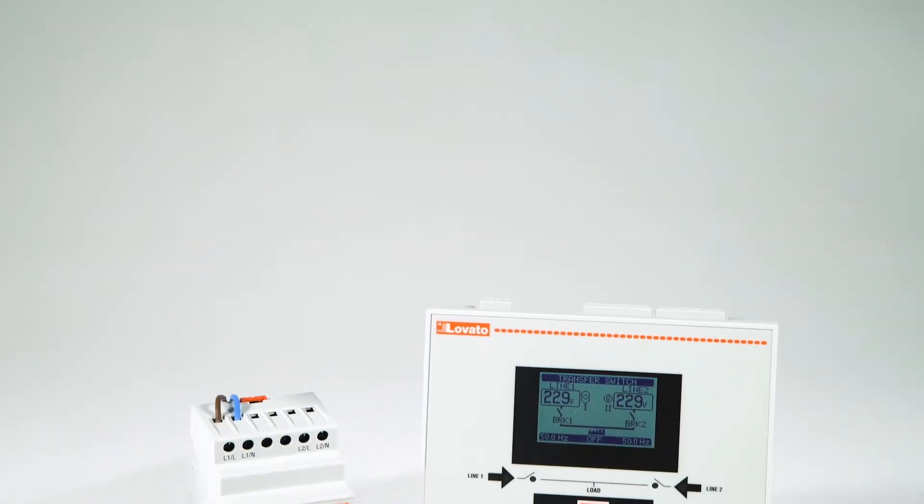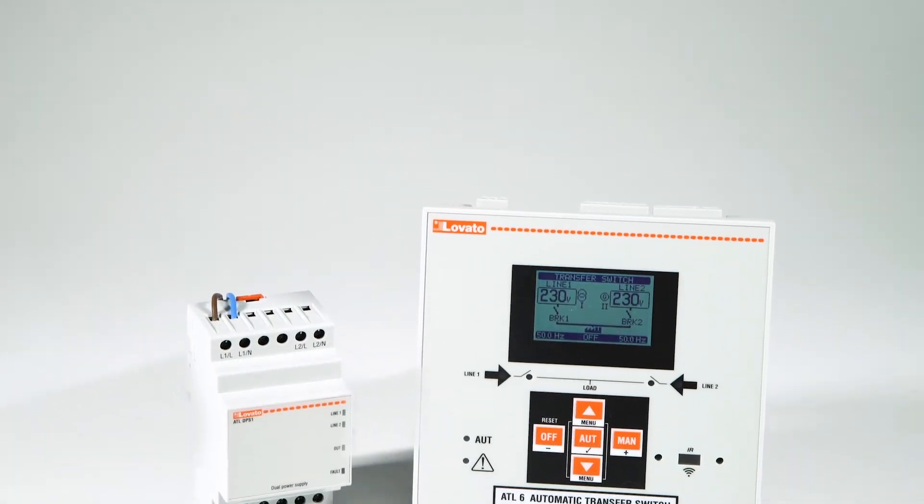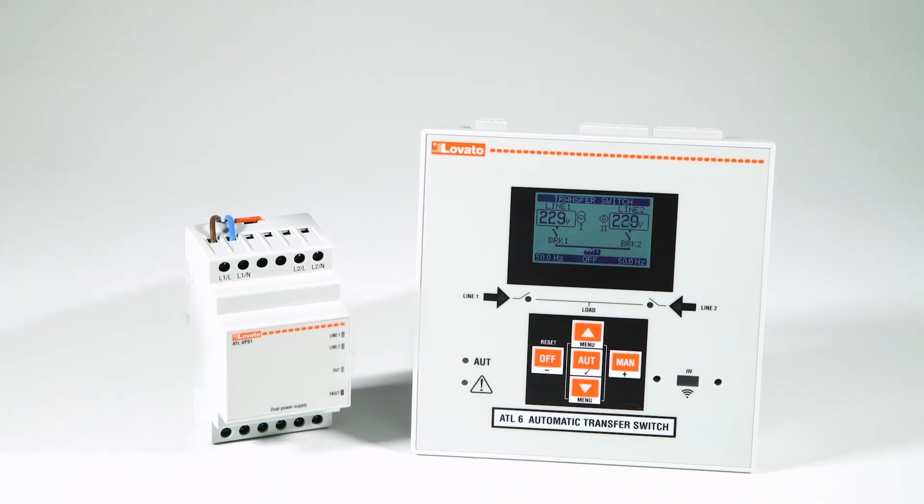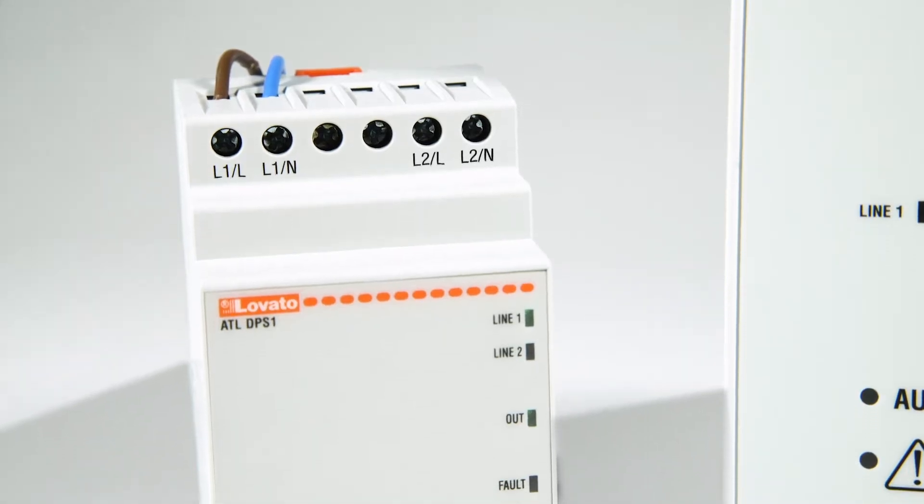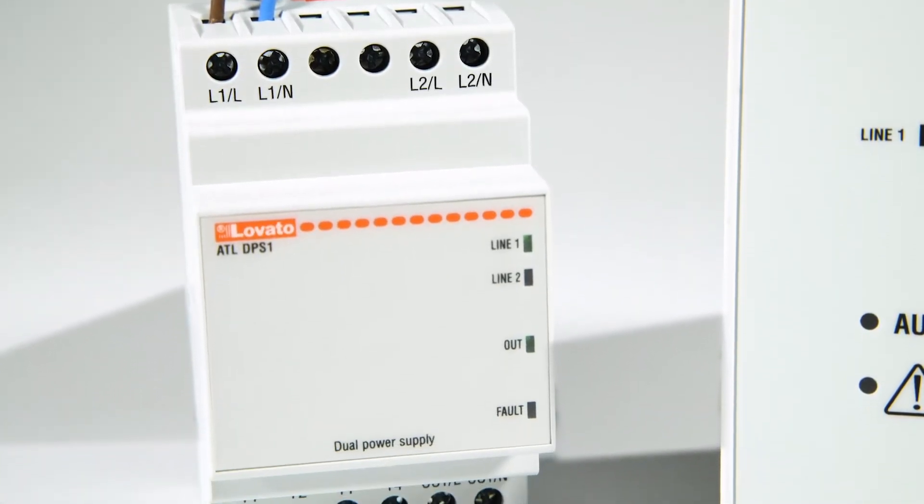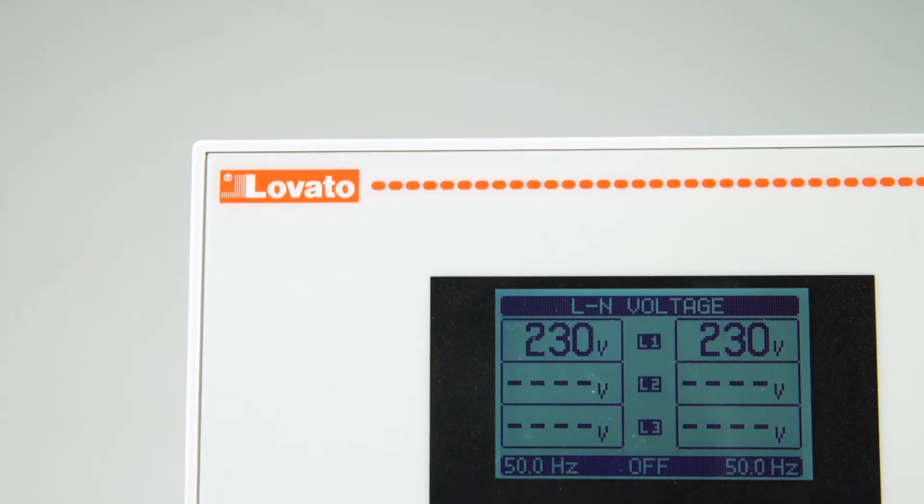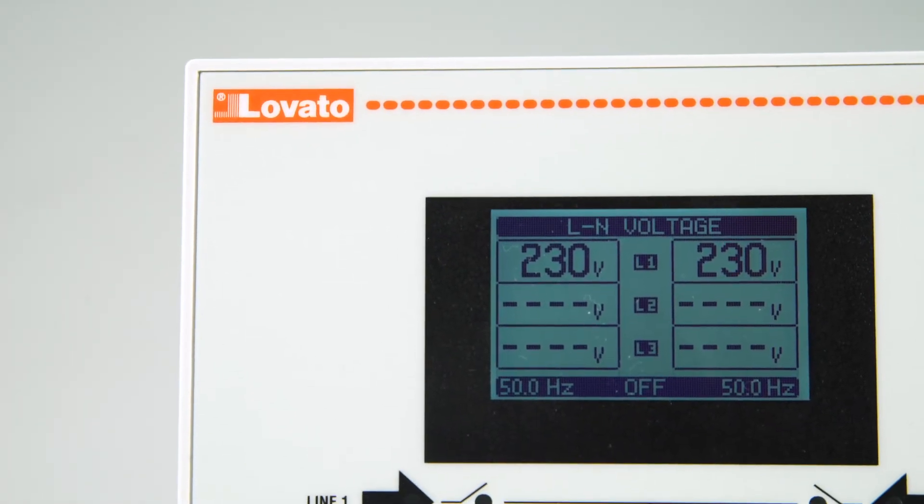When you choose an ATL Series mains switch with an AC power supply, it is advisable to use the ATL DPS1 device to swap the switch power supply between the main lines. This solution is useful when there is no UPS.